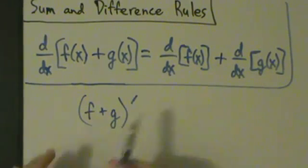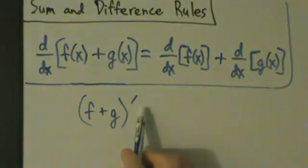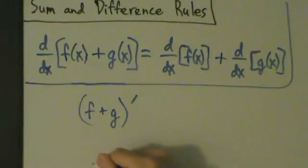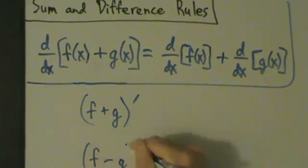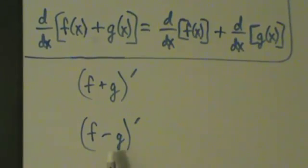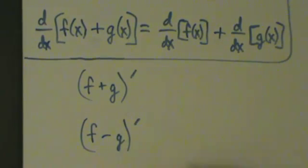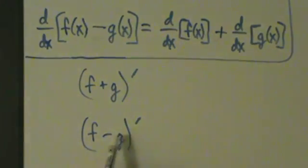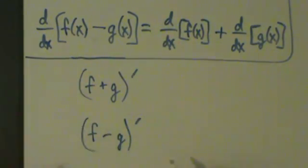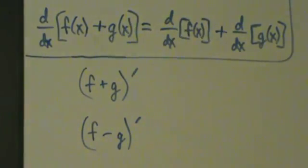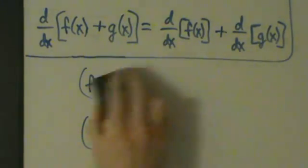If you have (f plus g) primed, that's shorthand notation for the derivative of f plus g. Similarly, (f minus g) primed is shorthand notation for the derivative of f minus g. So if you ever see something like that, just remember it's a shorthand notation. Now let's go ahead and prove these.